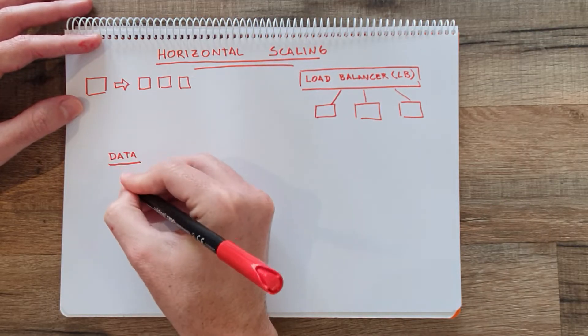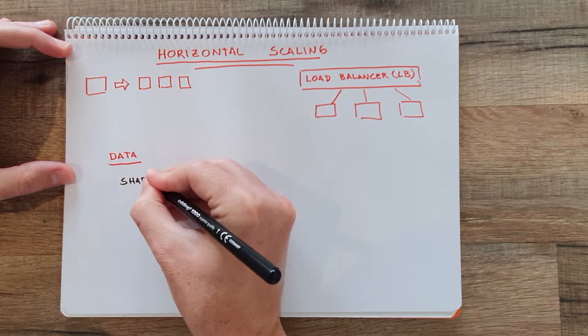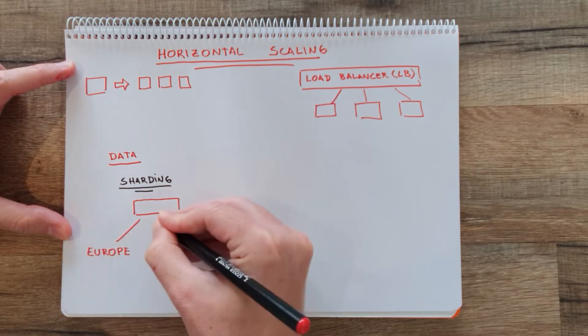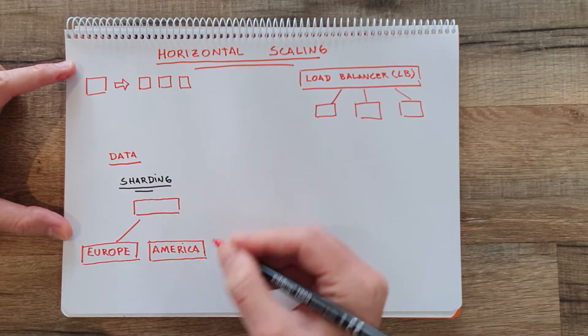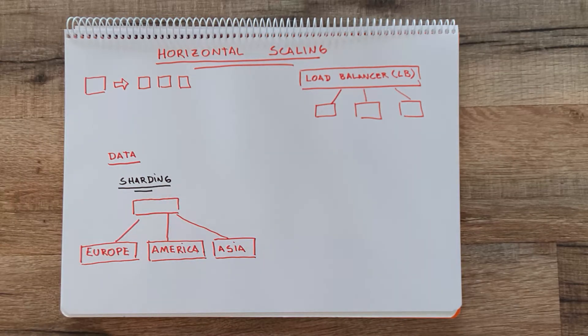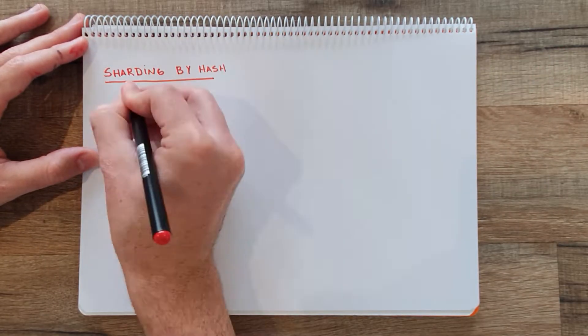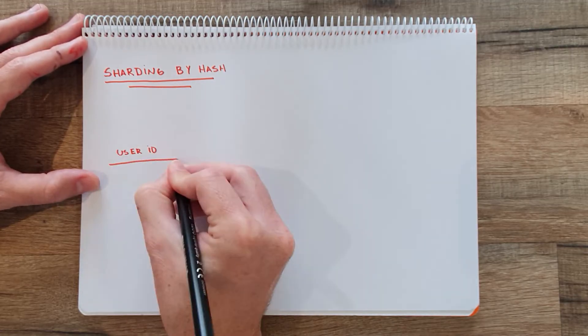We can also split the data using sharding or partitioning, where we divide the data between different servers. By splitting the data across multiple servers, you are able to scale each of them independently. Many systems work like this — for example, Flink or Kafka. You can split the data following different approaches: a vertical split by feature, by value (for example, splitting between America's user base, Europe, and Asia), or by hash, where you use a hash table to determine which database a given value will be stored in.